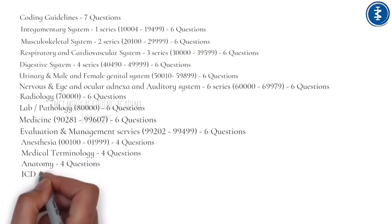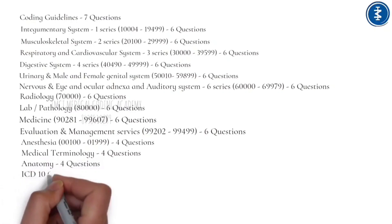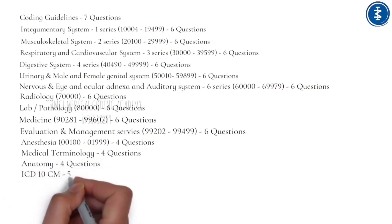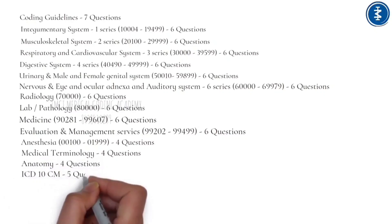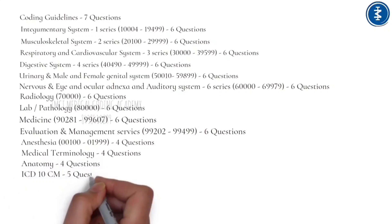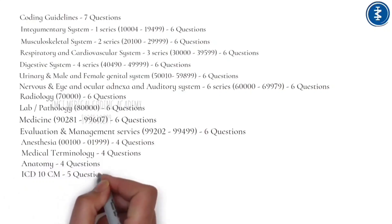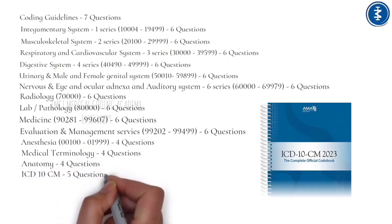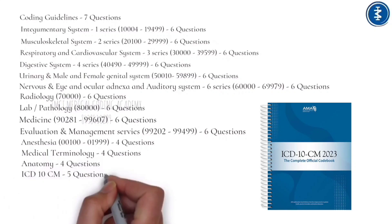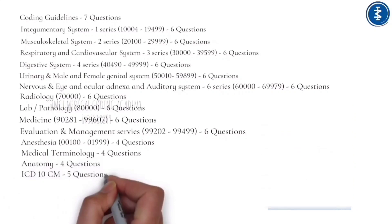The ICD-10-CM section has 5 questions covering the International Classification of Diseases. ICD-10-CM uses a 7-character alphanumeric code. Each code begins with a letter followed by two numbers. The first three characters represent the category, which describes the general type of injury or disease, followed by a decimal point and a subcategory.